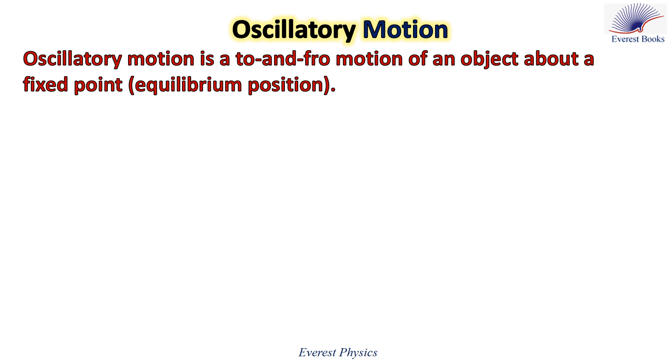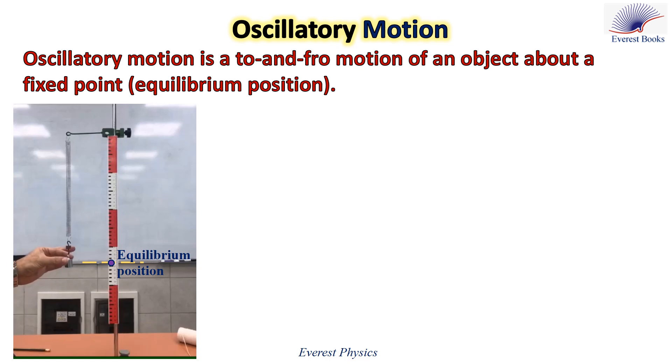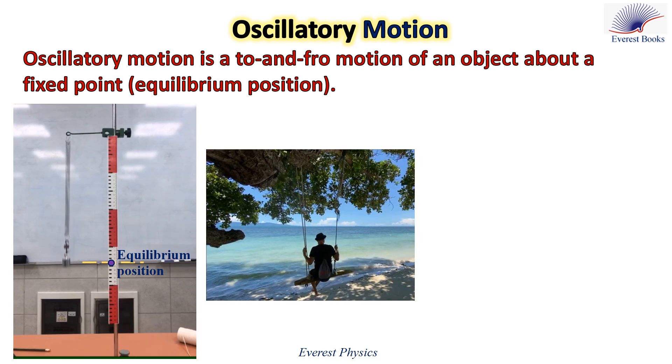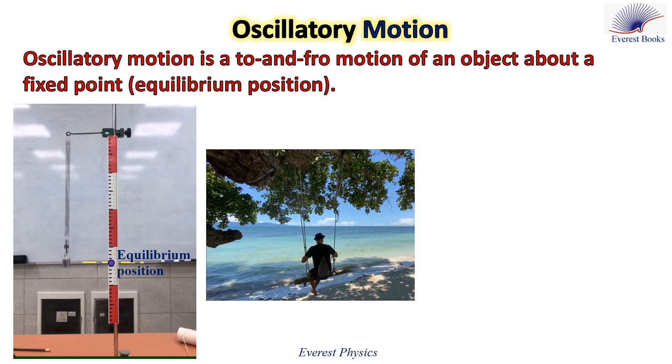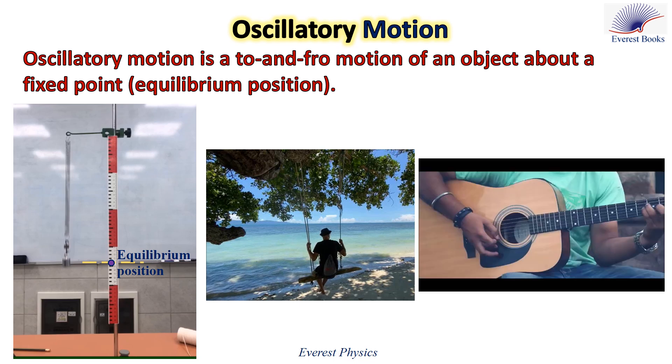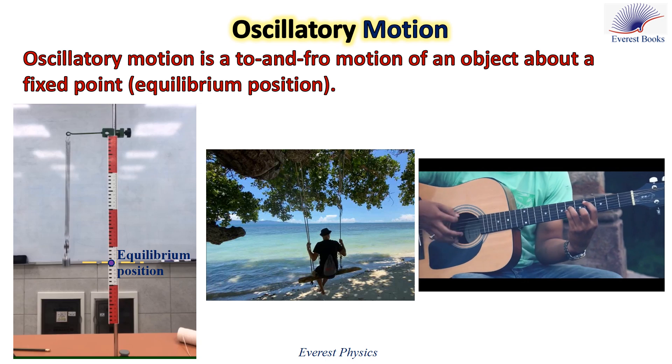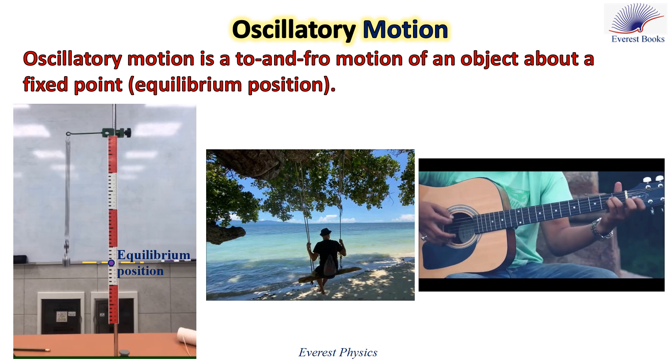Oscillatory motion is a to and fro motion of an object about a fixed point which is the equilibrium position. Now let's watch some oscillatory motions. When displaced from its equilibrium position, the object attached to the spring moves up and down above this equilibrium position. Now a man on a swing is moving back and forth about the lowest point. A man plays the guitar and chords move up and down above their original position.